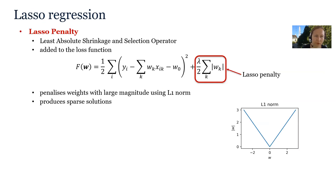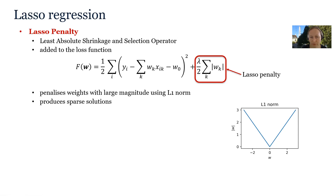An alternative to the ridge penalty is the LASSO penalty. LASSO stands for Least Absolute Shrinkage and Selection Operator. It is again added to the loss function and, just like ridge, penalizes weights with large magnitude, but this time the penalty is calculated using the L1 norm, which is simply the sum of absolute values of the individual weights.